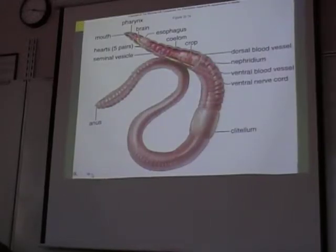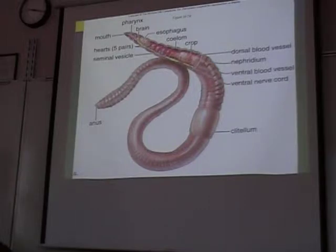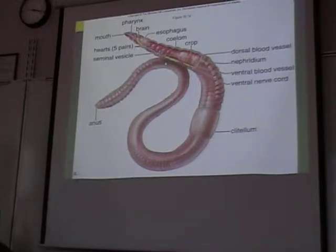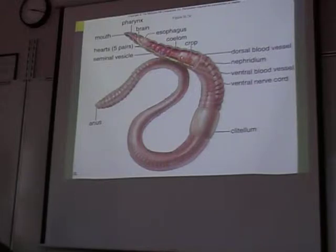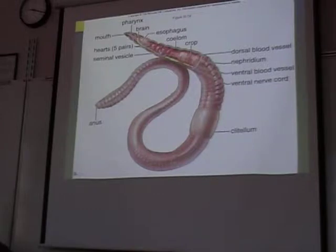Here's one — this is what we're going to cut up tomorrow. Look inside of it. It's got a brain — very small. A ventral nerve cord, meaning a nerve cord running down the front of its body. It's got five pairs of hearts — ten total, one on either side. So it has five pairs of hearts; that's true.